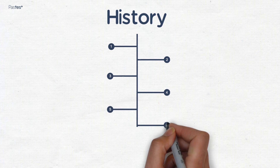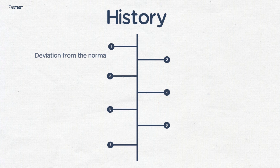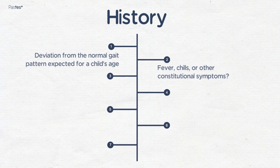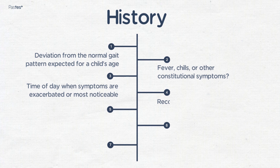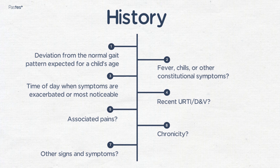The limping child. A limp is defined as a deviation from the normal gait pattern expected for a child's age, and you should take a robust history when examining the limping child. Have they had any fevers, chills, or systemic symptoms? When do their symptoms get worse or better? Have they had any recent upper or lower respiratory tract infections, diarrhea or vomiting? Are there any other associated aches or pains, especially in other joints? How long have they had this limp for? And are there any other signs or symptoms that the parents are aware of?